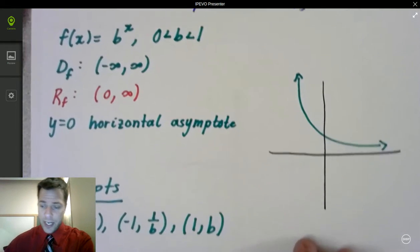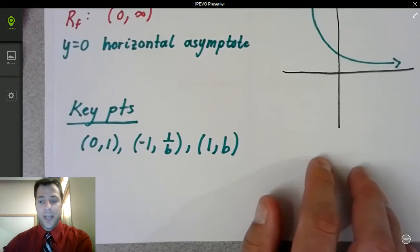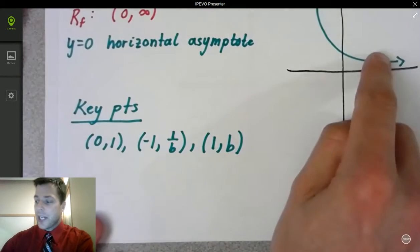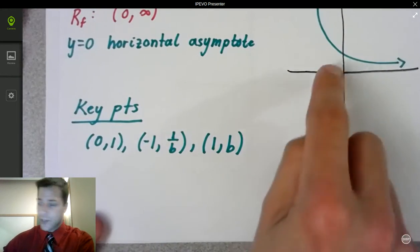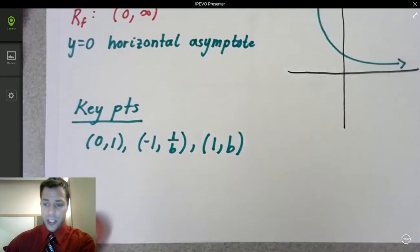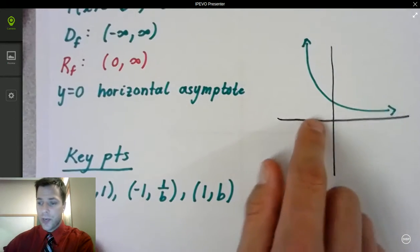The horizontal asymptote remains the same and the key points are the same except for in this case they're actually going to change from the last example. So instead of having 1, b, they actually switch places.